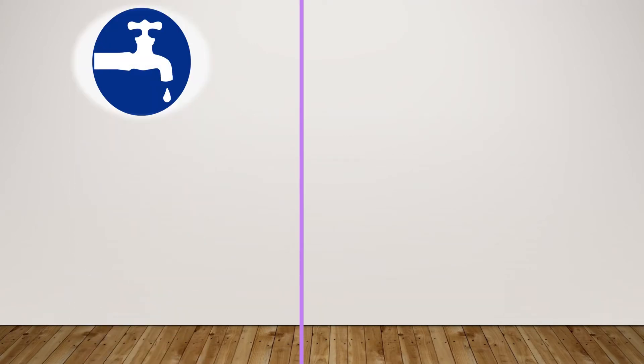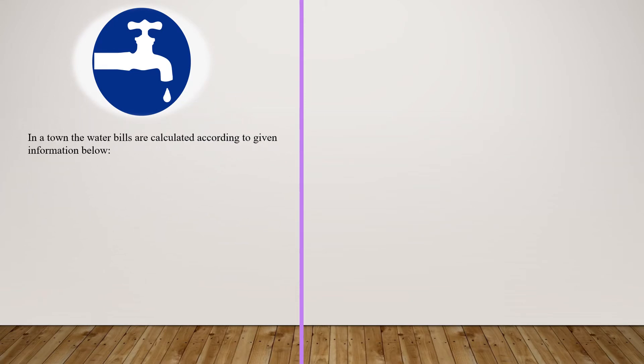Let's finish our session with another problem about multiplication on decimals. In a town, the water bills are calculated according to the given information below. The unit price is 5.05 dollars if the consumption is between 0 and 10 tons, and the unit price is 6 dollars if consumption is higher than 10 tons.